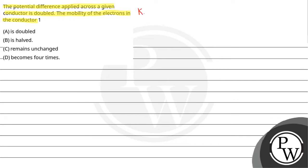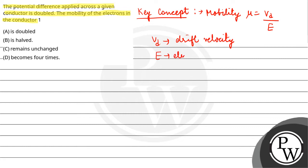So, here our key concept is mobility. Mu is equal to drift velocity upon electric field. VD is the drift velocity, and E is electric field.